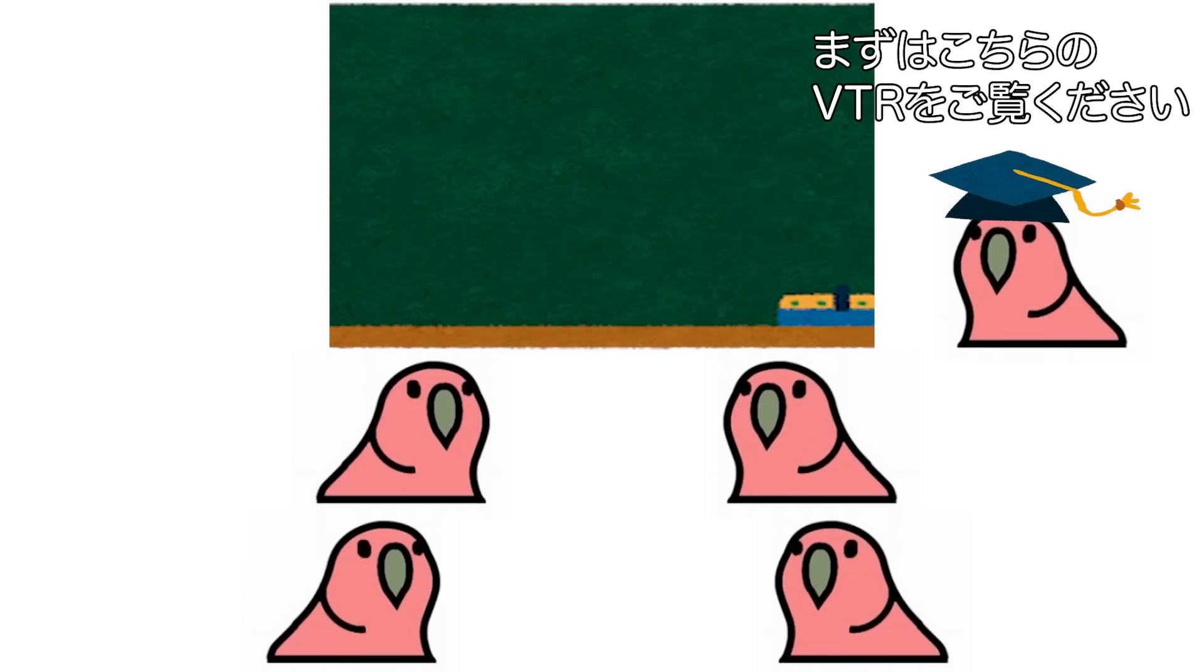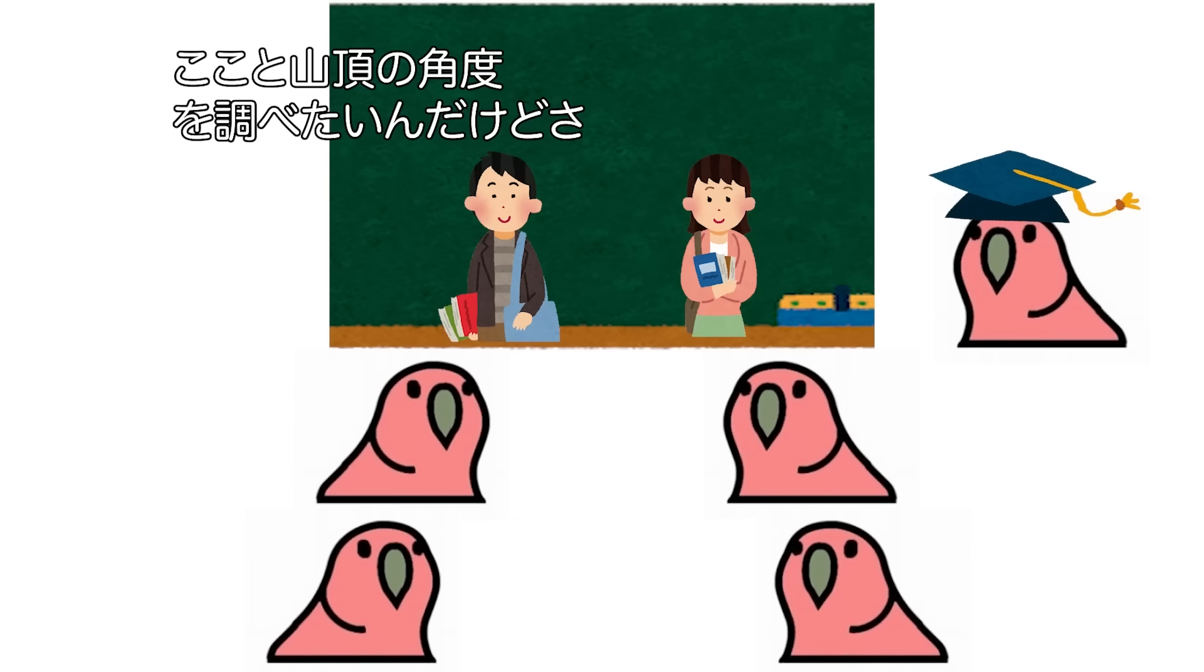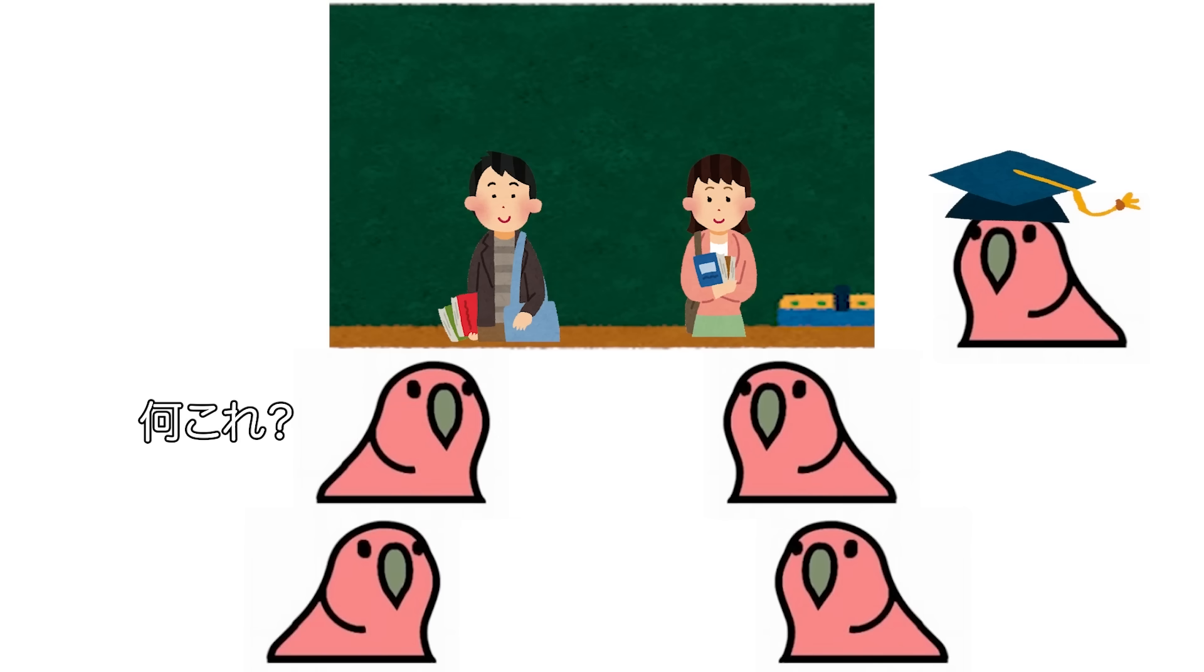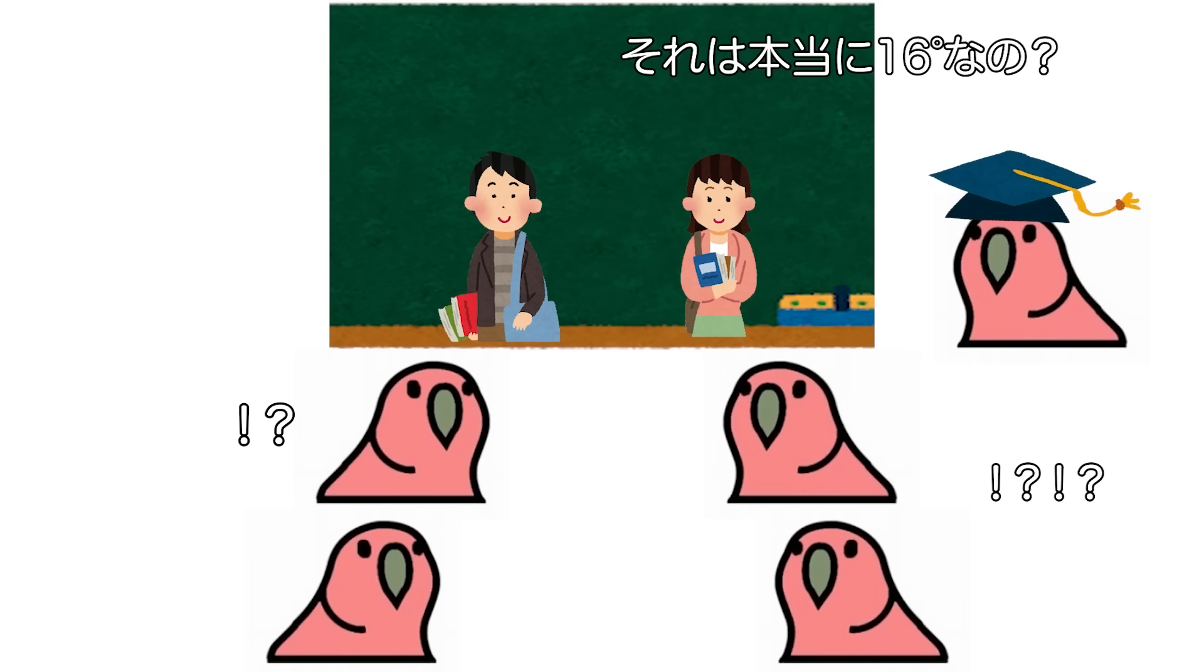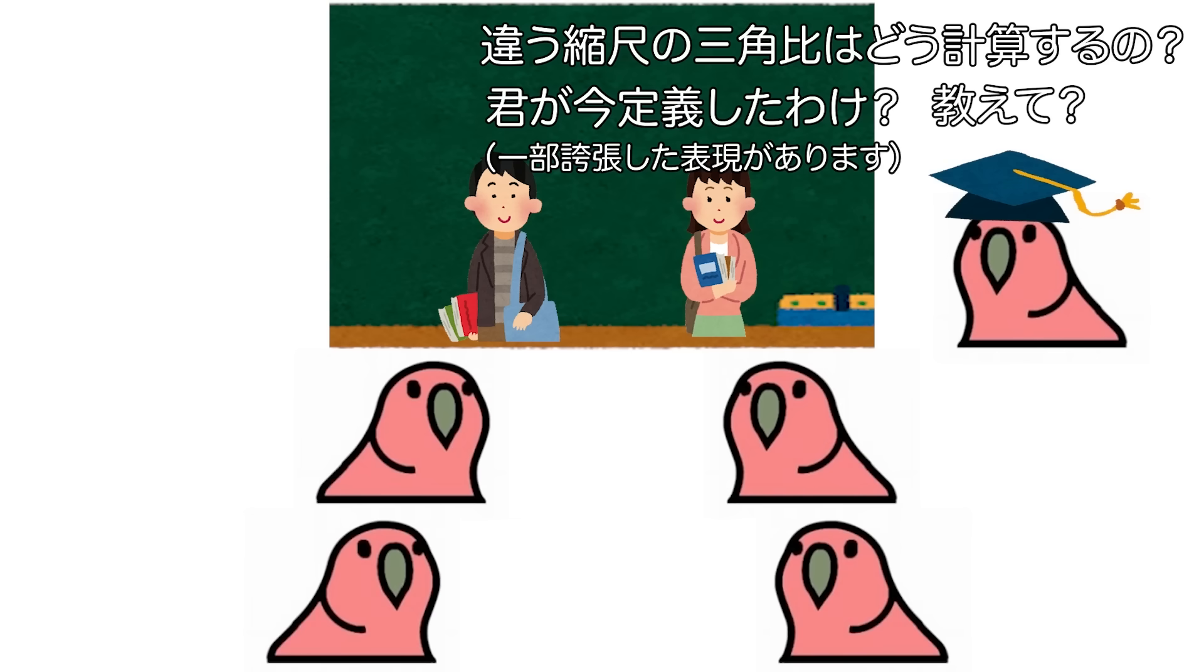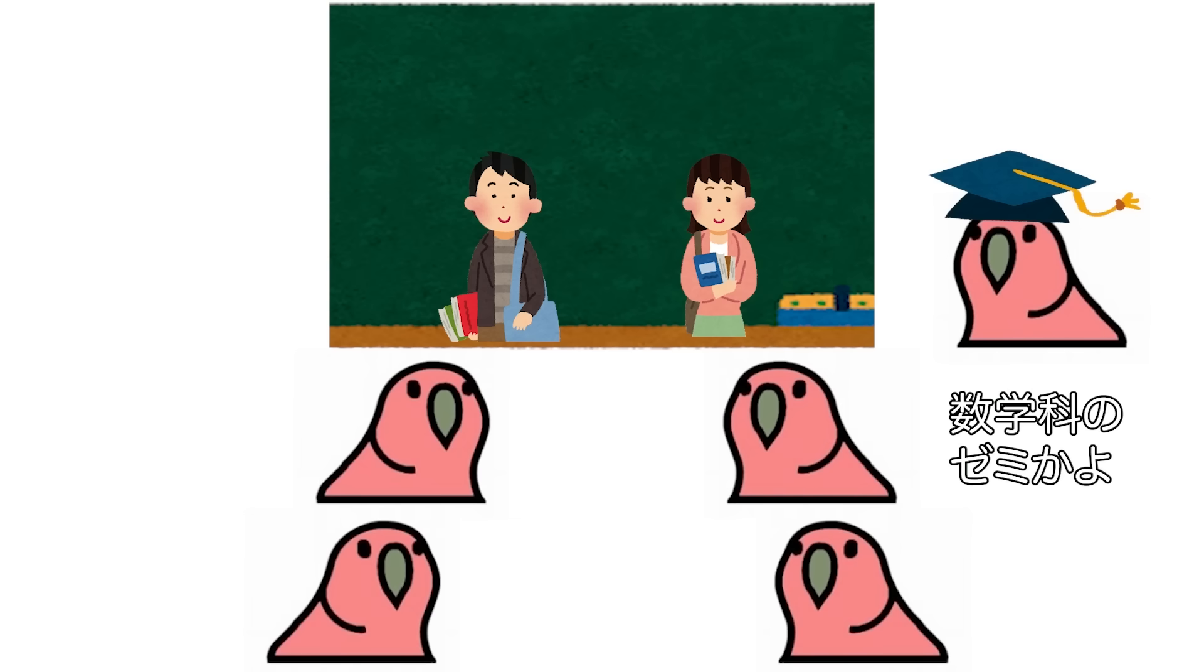Next, mazu wa kuchara no VTR wa goran kudasai. Koko to sanchō no kakudo wo motometain da kedo sa. Un un. Chizu apuri de tangent theta wo hakattara, chōdo 16-do datta yo.